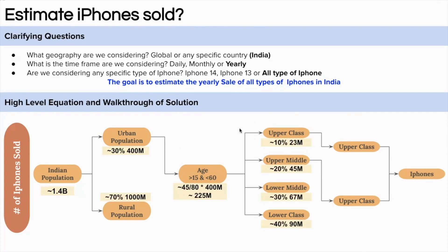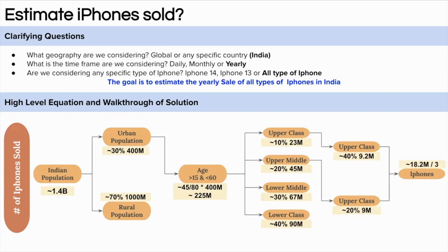Not all 23 million upper class people will buy an iPhone, because there are other players like Samsung and OnePlus. Let's assume 40% of the upper class in urban areas will buy an iPhone — that gives around 9.1 million. Similarly, let's assume 20% of the upper middle class will buy an iPhone — that gives around 9 million. The lower middle class and lower class won't be buying an iPhone. Adding both gives around 18.2 million iPhones in India.